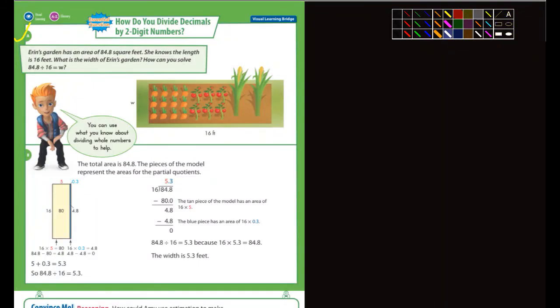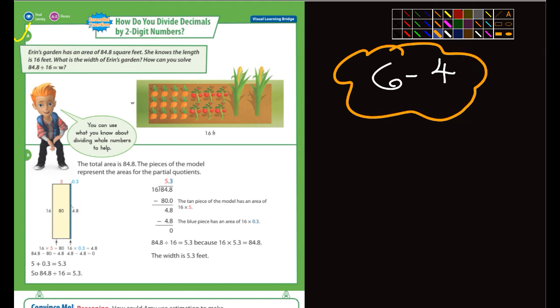Okay fifth graders, this is lesson 6-4. We've been dealing with division, single digit division and now we're doing some double digit division. The good news is it's no different. They've got a garden here, it's 84.8 square feet and she knows the length is 16 feet, so she wants to know the width. What would you do? You would simply write 84.8 divided by 16.